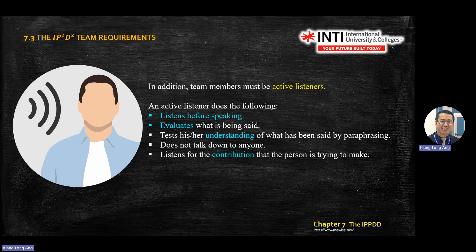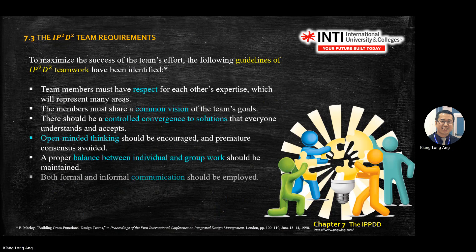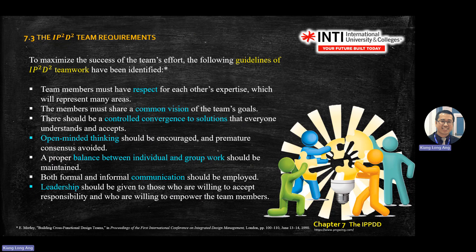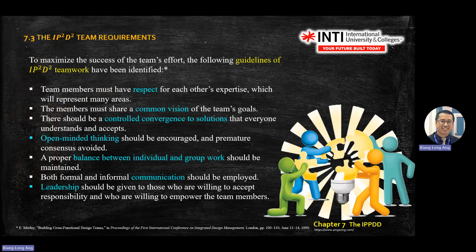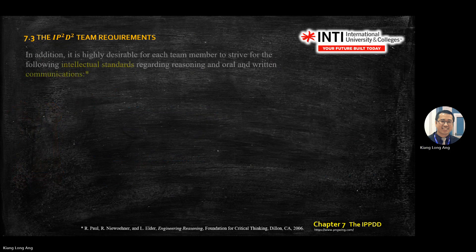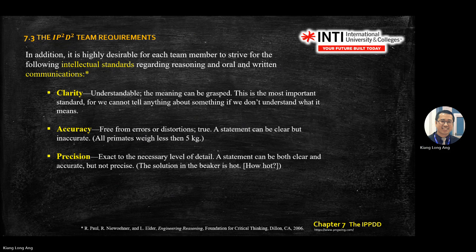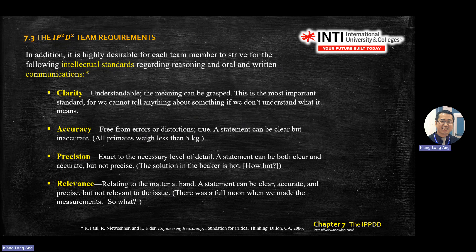FTIP listeners should have followed teamwork interaction guidelines. The ground rules for teamwork cover seven principles. Team leader characteristics include five key traits. Communication standards for reasoning and oral/written communication should have: Clarity, Accuracy, Precision, and Relevance (CAPR).